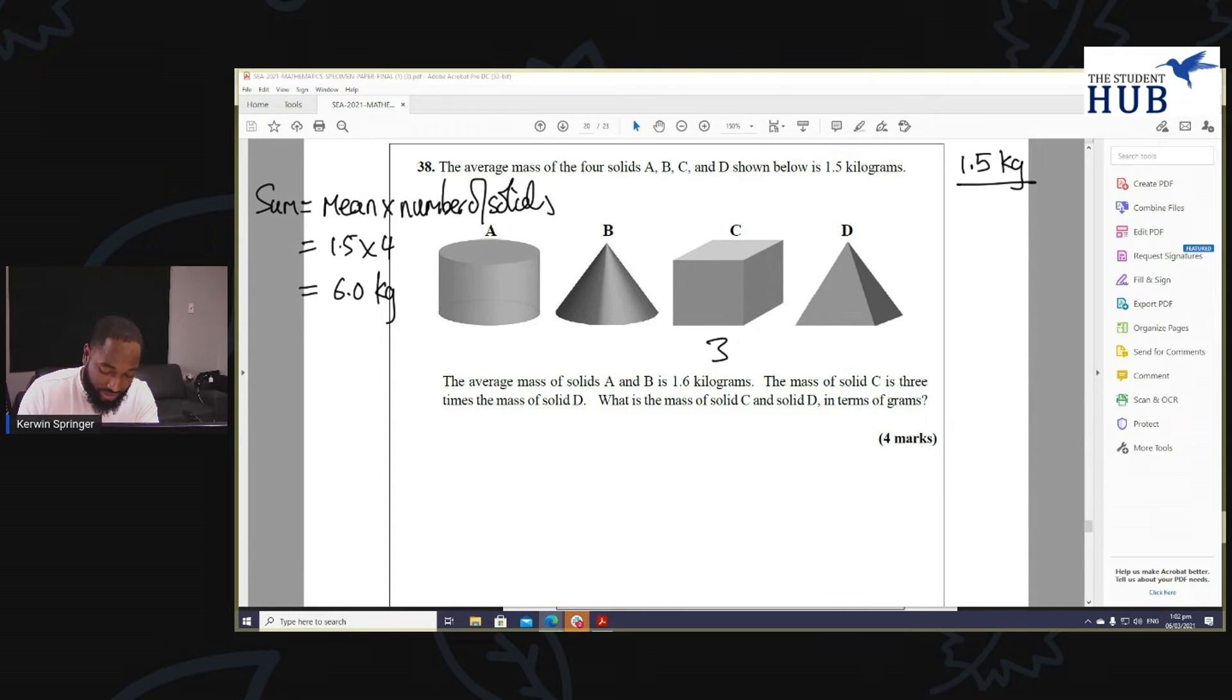So let me show you how I'd go about to do this, how I would think about this. The sum: mean multiplied by the number of solids. We have the total mass. Let's find the mass of A and B together. So this is the sum of A, B, C, and D. Let's get the sum.